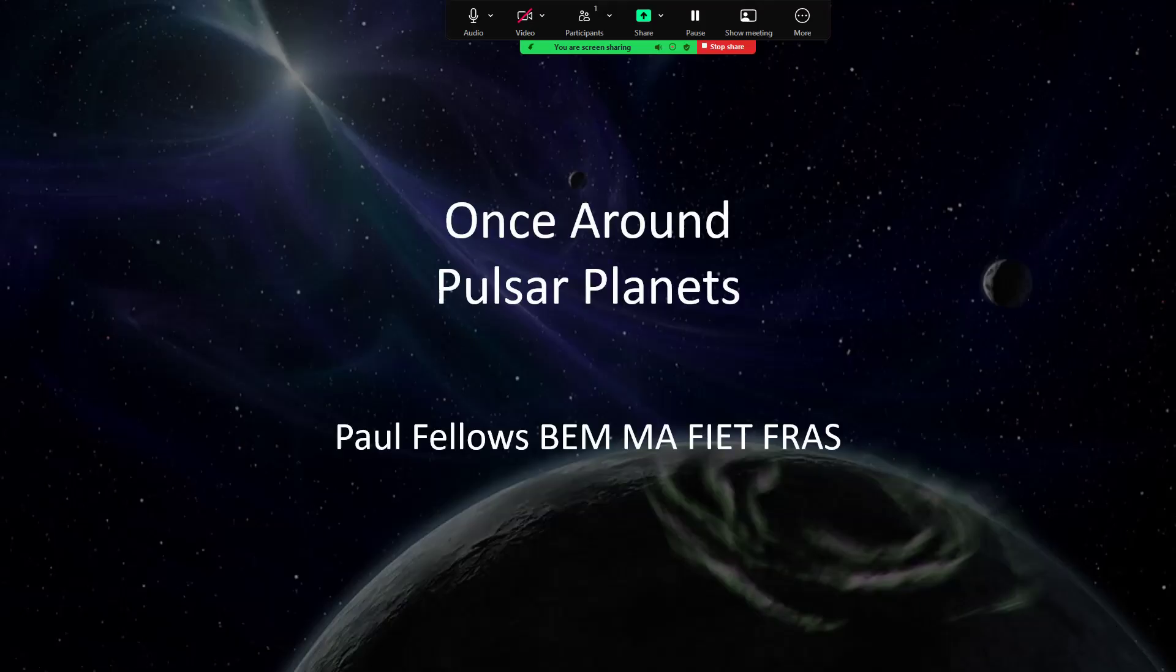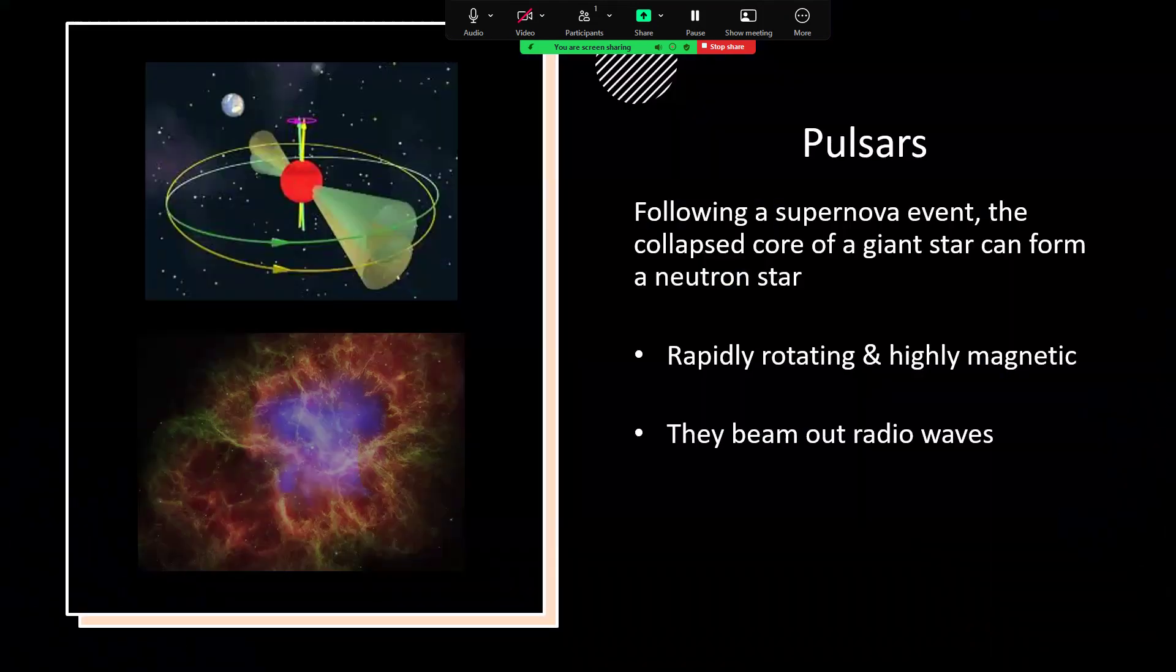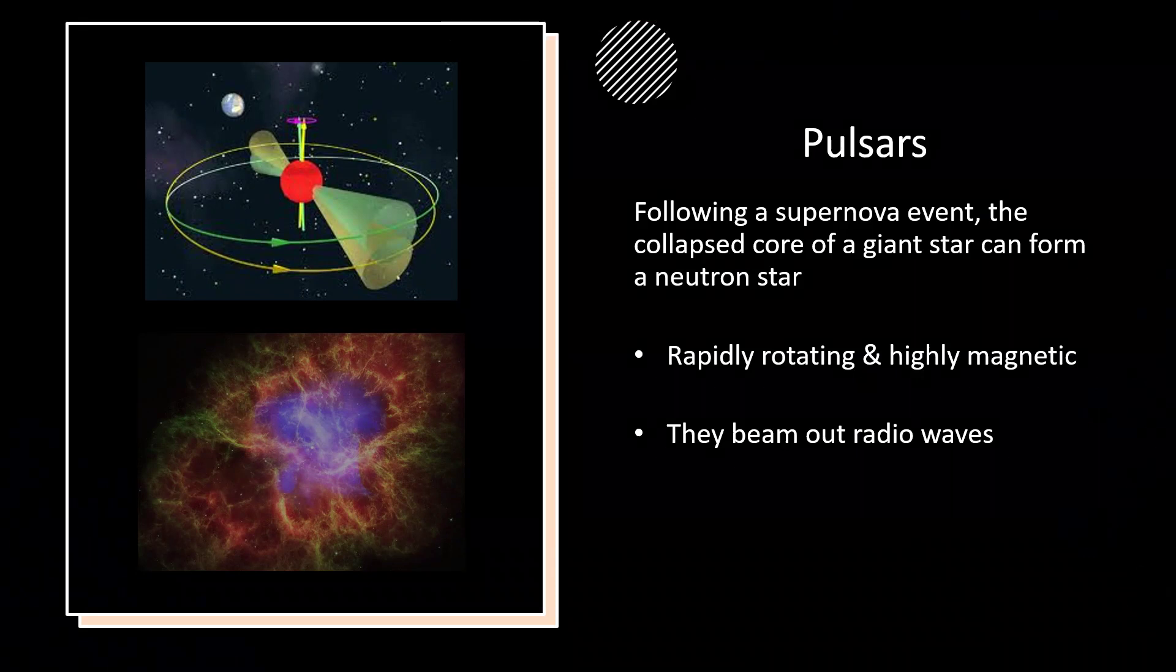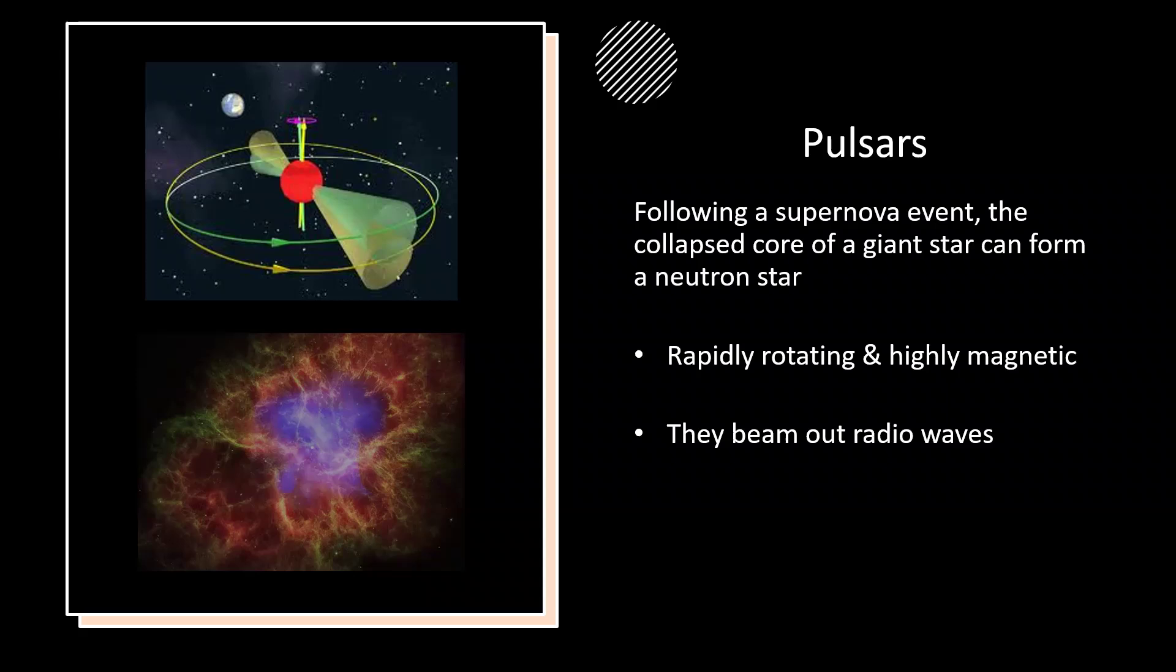Once around pulsar planets - who would have thought that these remnants of a supernova, these collapsed cores, neutron stars rotating rapidly as a result of the conservation of angular momentum? Just like a skater when they pull their arms in on an ice rink, they spin up faster. As the core of a giant star collapses in an implosion to form a neutron star, that neutron star will be spun up to very wild speeds indeed.